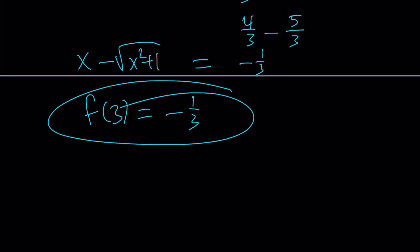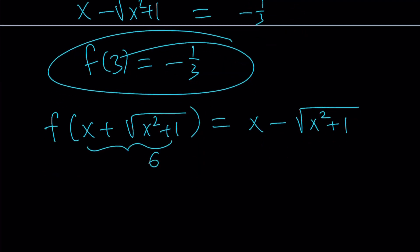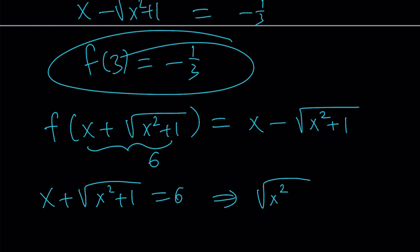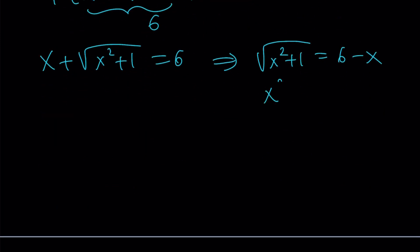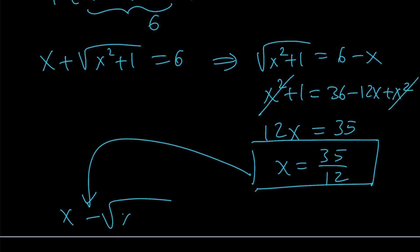So we have f of 2 equals negative 1 half, f of 3 equals negative 1 third. A pattern is emerging — or is it? We've got to do a little more work before we can conclude that. Hopefully the second method will make it much more clear. Now we need to evaluate f of 6, so we set the expression equal to 6 and solve: isolate the radical, square both sides.